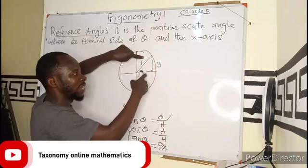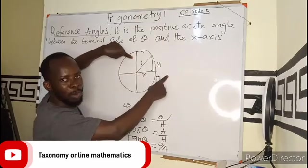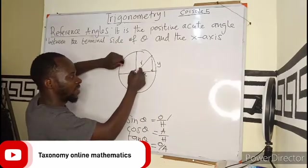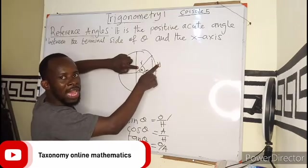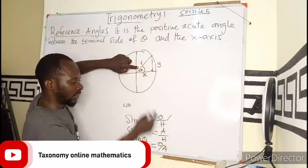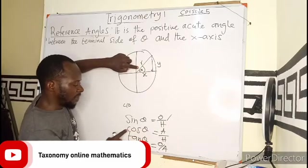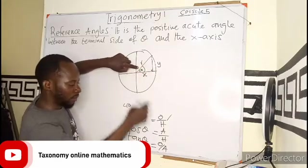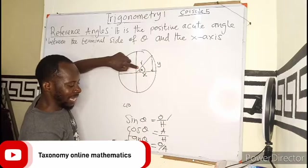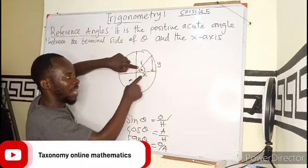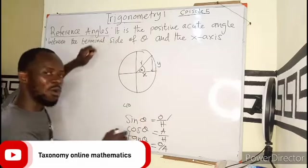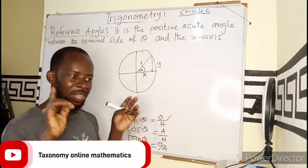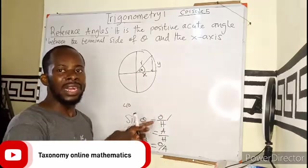In the 1st quadrant, both x and y are positive. So sin theta — opposite y over r — is positive over positive, giving a positive result. Cos theta — adjacent x over hypotenuse r — both positive, so cos is positive. Tan — opposite over adjacent — positive over positive, so tan is positive. Therefore, the values of sin, cos, and tan in the first quadrant are always positive. All acute angles give positive trig ratios.